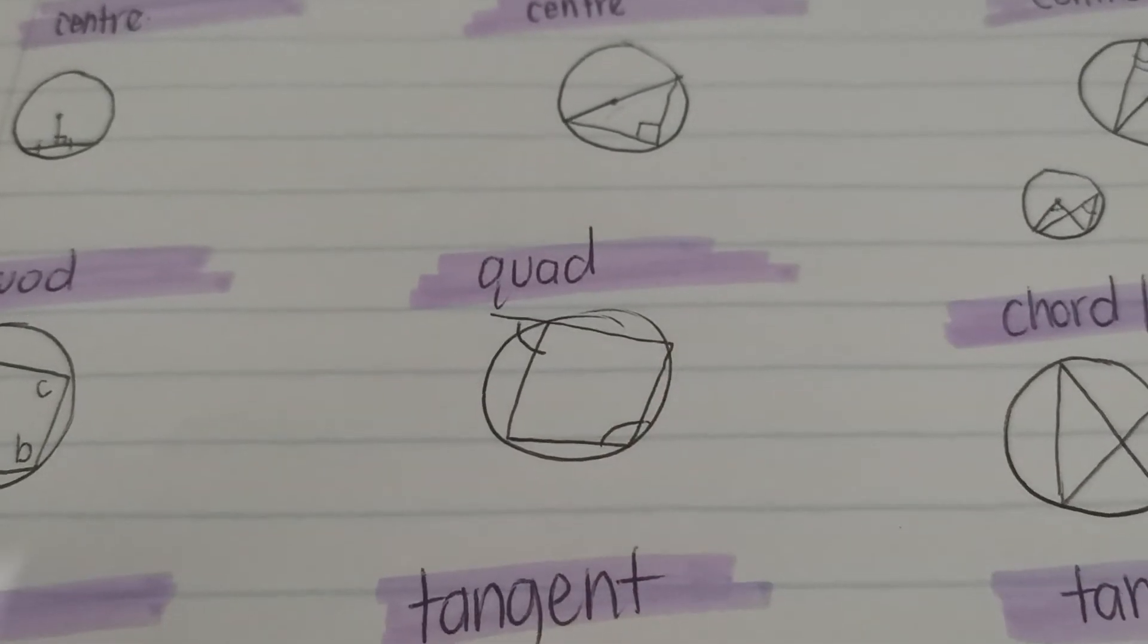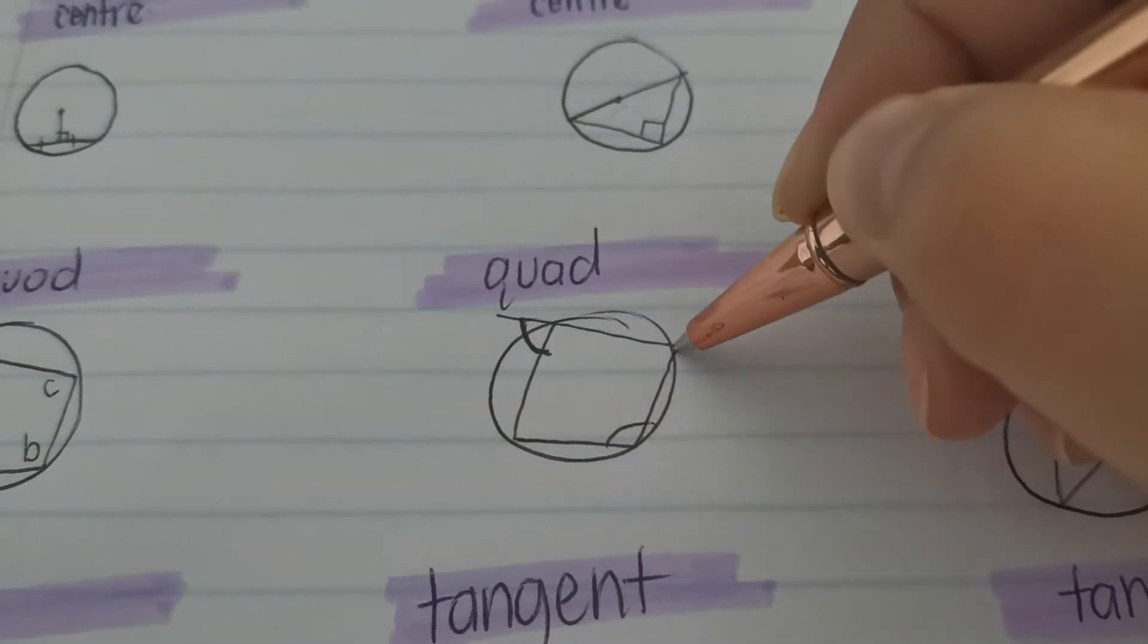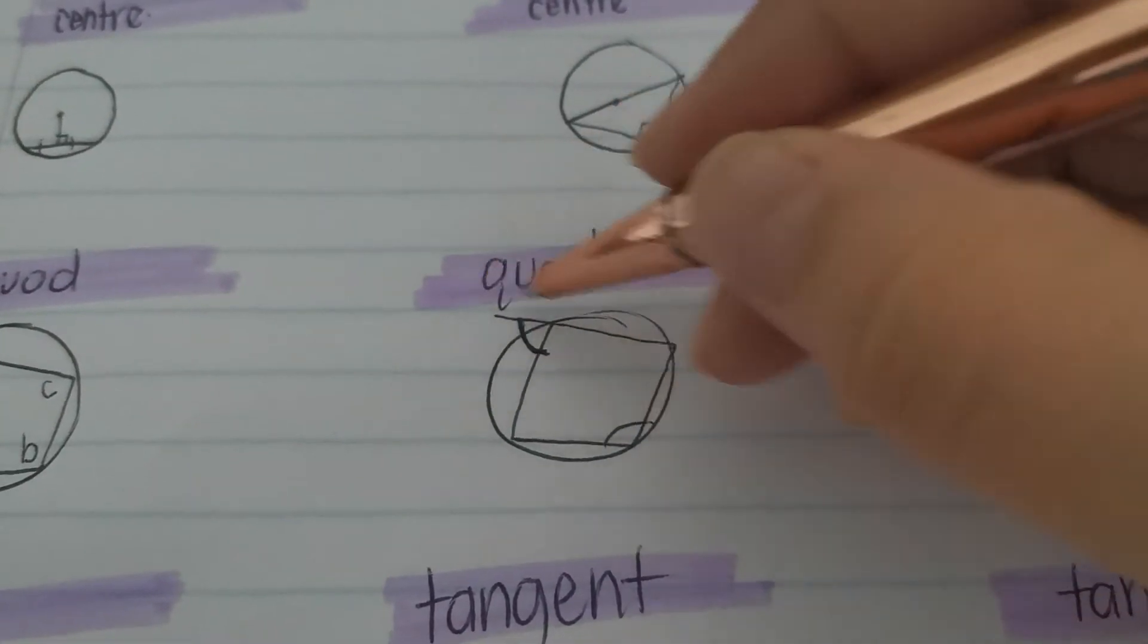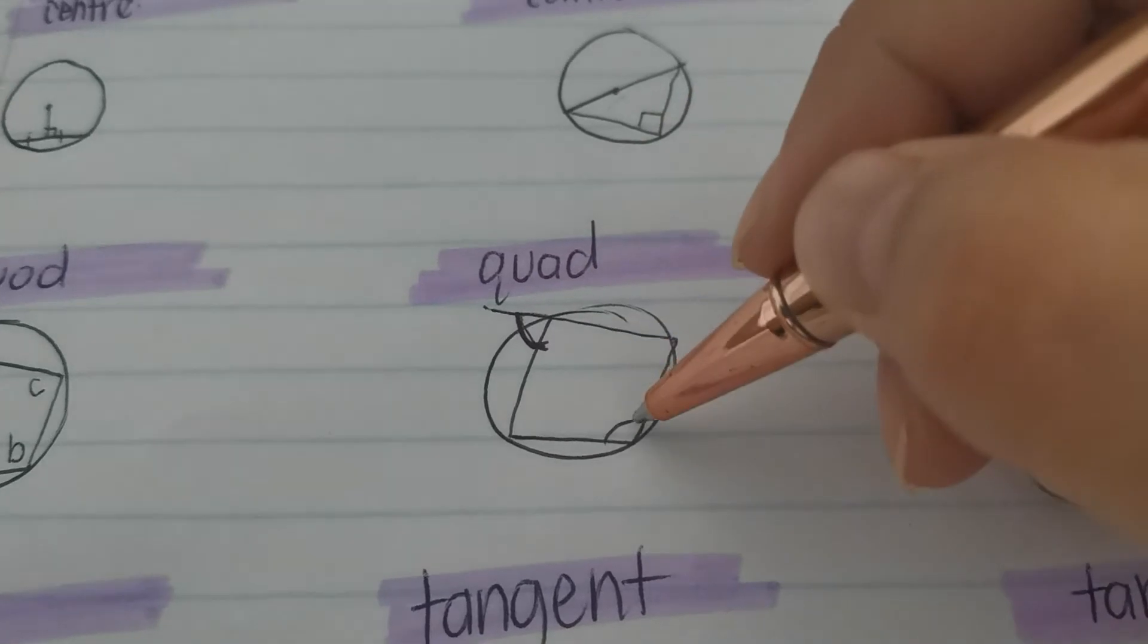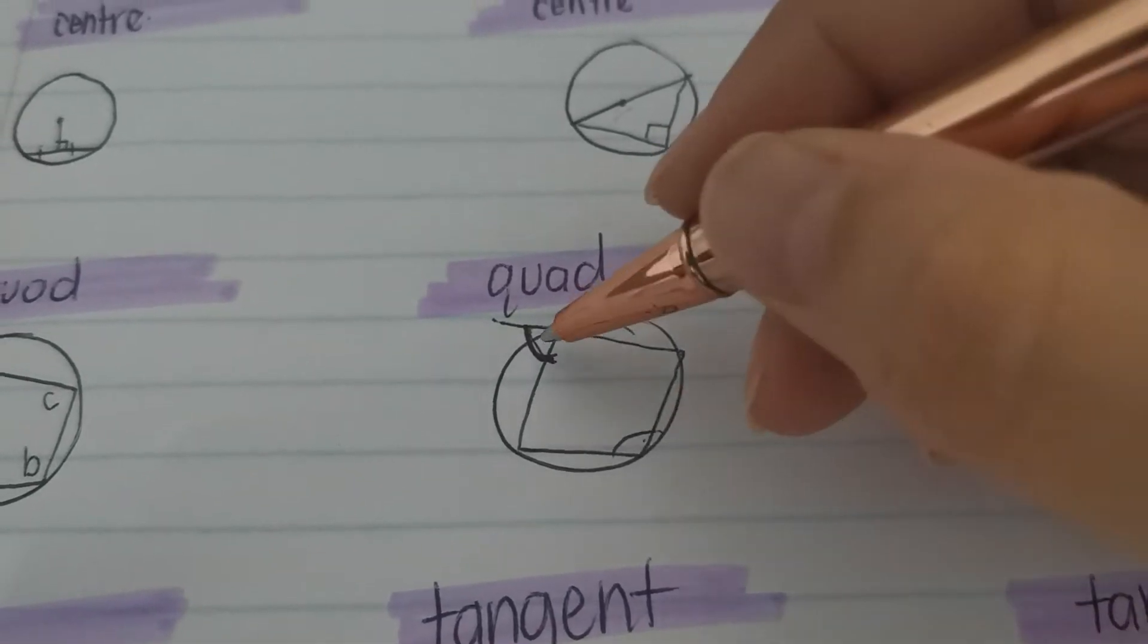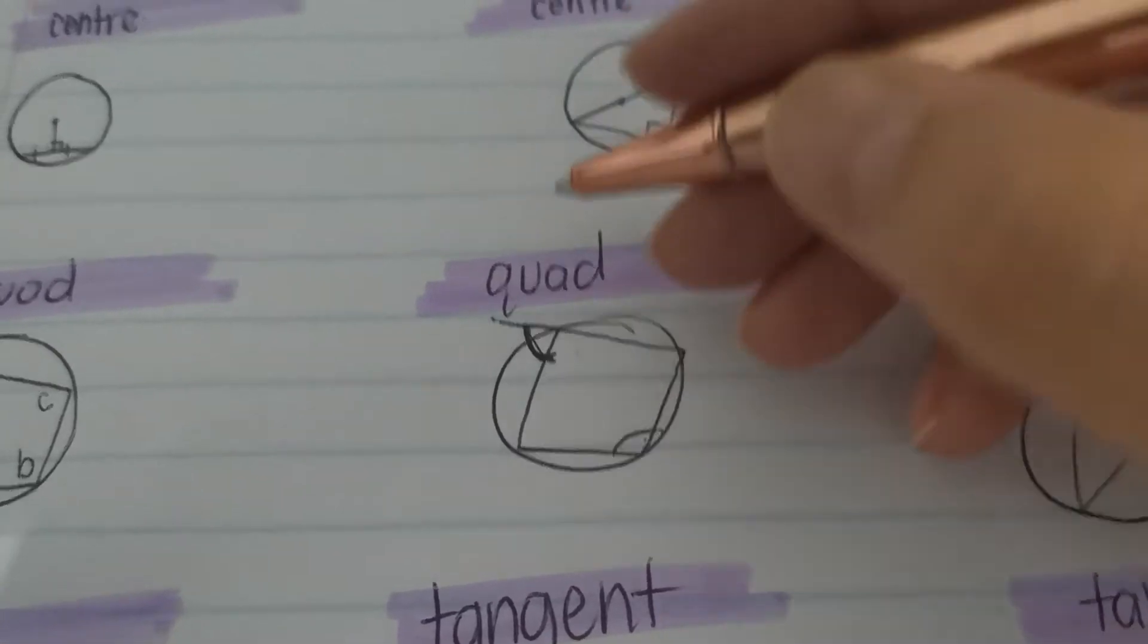The other one, based off this theorem, we get this one here. It's the exterior angle of a cyclic quad. Basically, this angle on the outside, made with one of the lines of the quad extended, hence exterior angle, is equal to the opposite interior one. So jump over here, and this angle here.